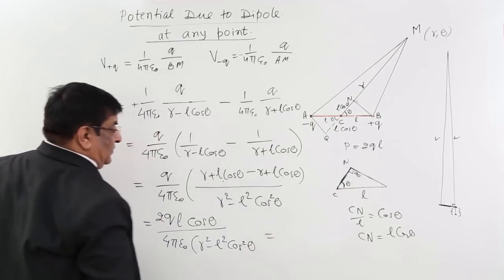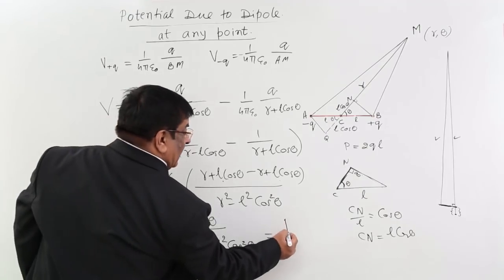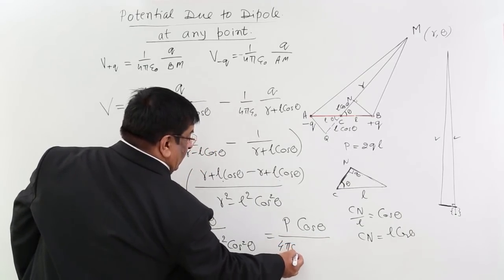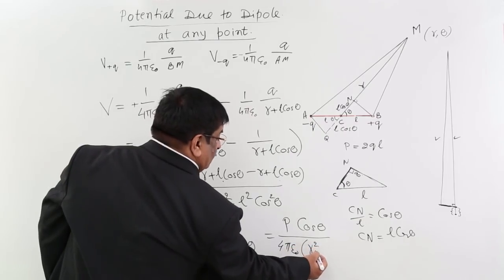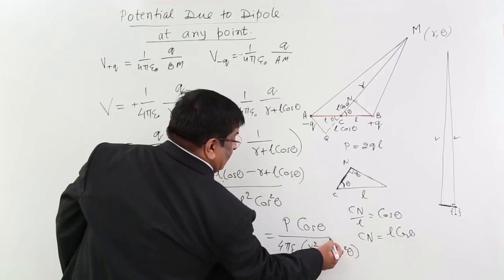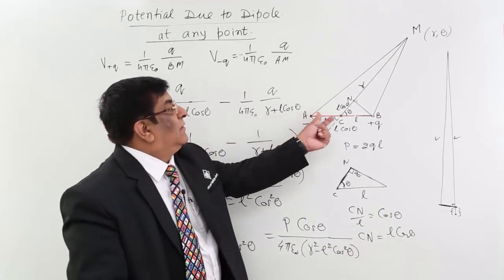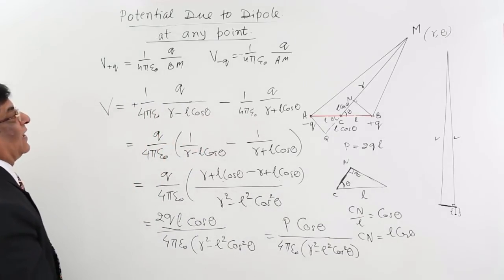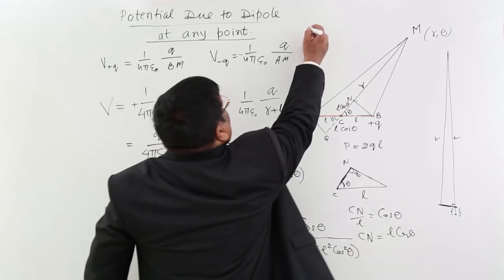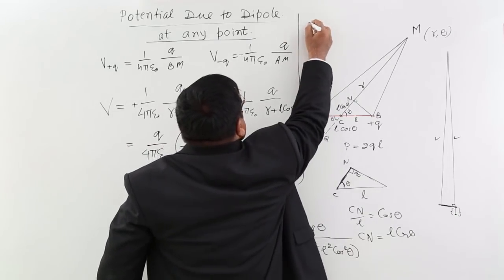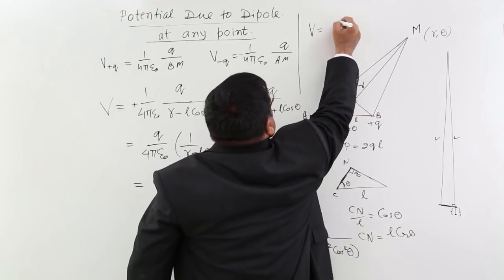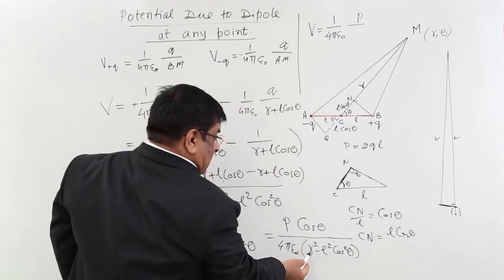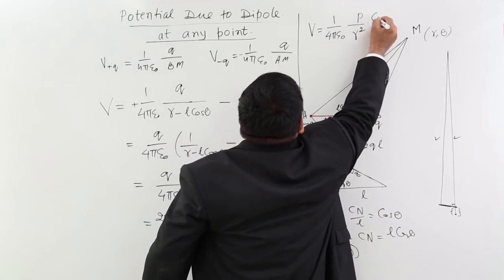Since 2qL equals the dipole moment P, the expression becomes V = P cosθ / (4πε₀ (R² − L² cos²θ)). Since r is very large compared to L, we can neglect the L² cos²θ term in the denominator. The formula thus reduces to the simple general formula: V = (1 / 4πε₀) × (P cosθ / r²).